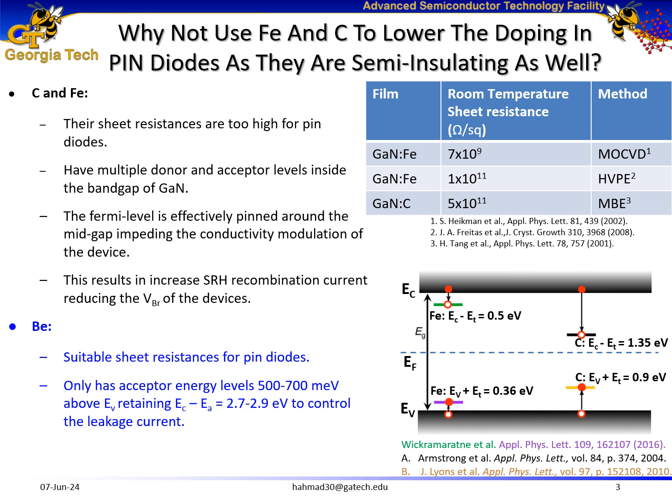The first question arises: iron and carbon also result in semi-insulating films, so why can we not use iron and carbon for the i-layers in PIN diodes? The answer is that both iron and carbon have high sheet resistance, which are not suitable for i-layers in PIN diodes. Also, both have multiple donor and acceptor levels inside the band gap of gallium nitride, leading to increased leakage currents and reduced breakdown performance.